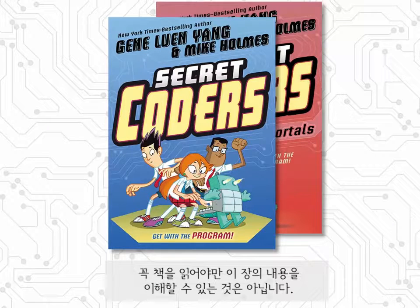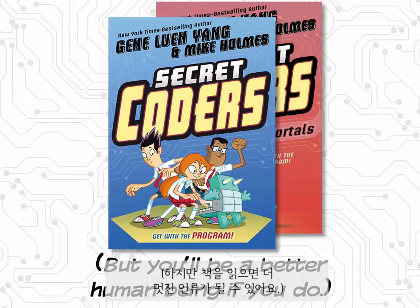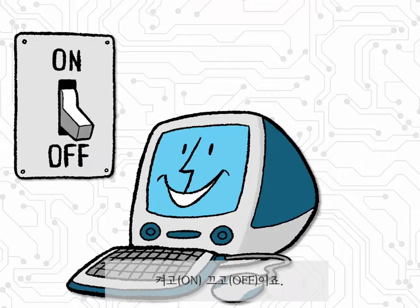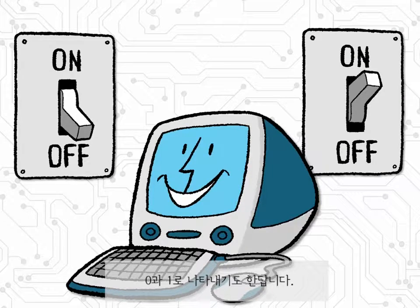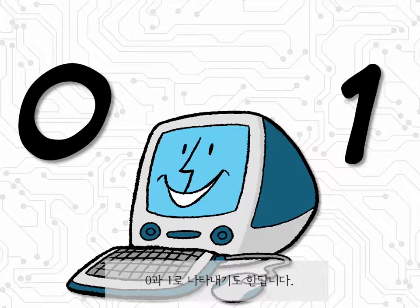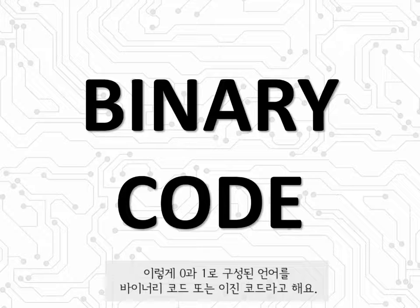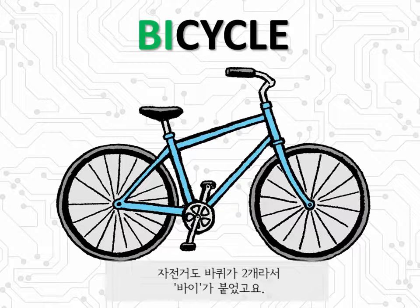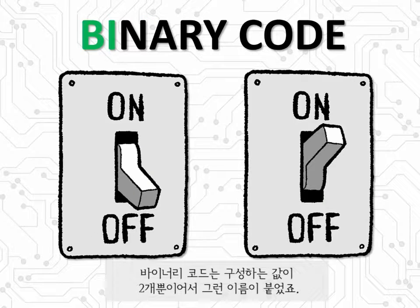You definitely do not have to read the books in order to understand this lesson. Deep down inside, computers only understand two values: off and on, which are sometimes represented as 0 and 1. This means that your computer stores every letter, every number, every color — everything — as a sequence of 0s and 1s. This language of 0s and 1s is called binary code. It's called binary because 'bi' means two. A cycle with two wheels is called a bicycle; a language with two values is called binary code.